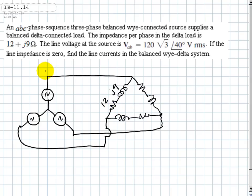We are also told this is phase A and phase B and phase C. We are given this voltage here, 120 root 3 at 40 degrees.